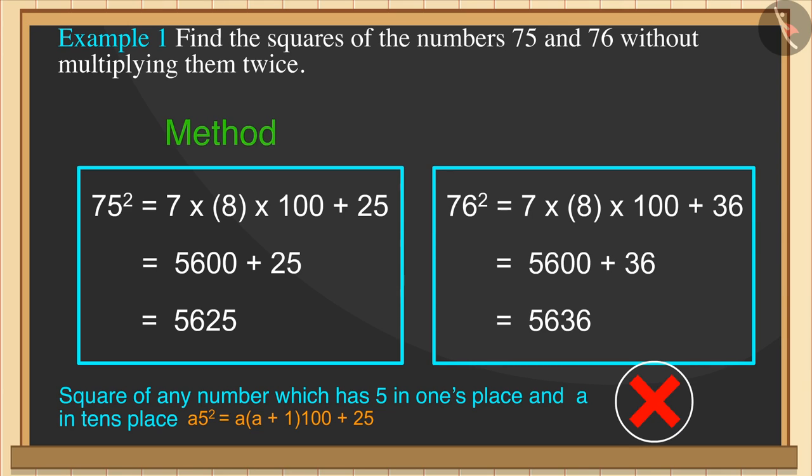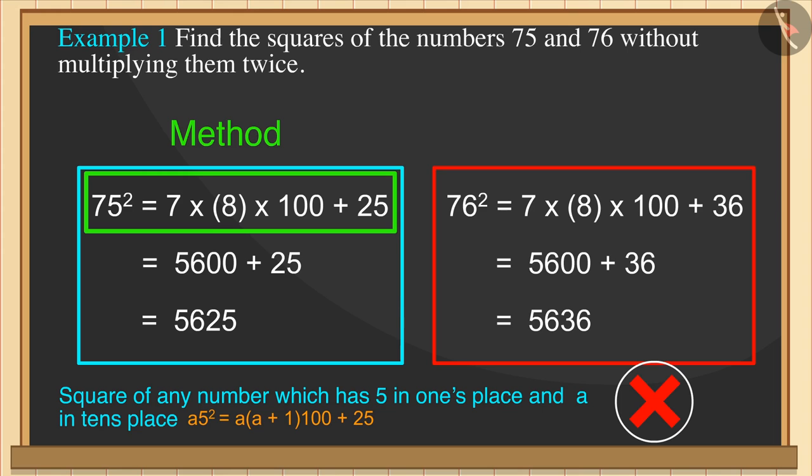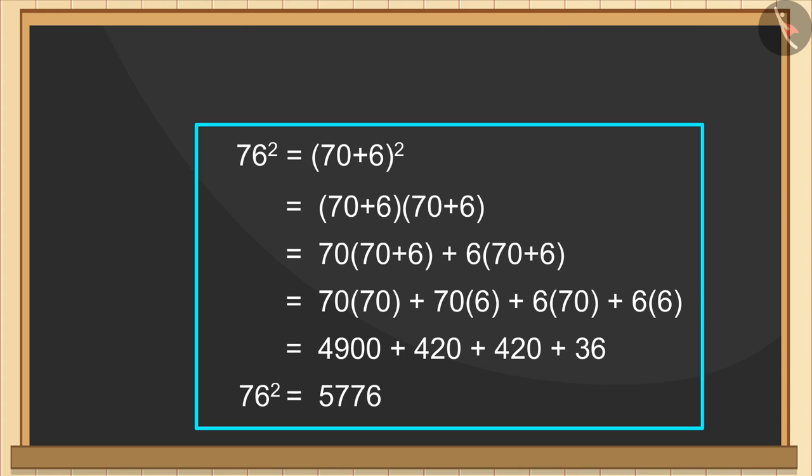Because the method applied here to find out the square of 75 is used to find the square of numbers ending in 5. There are several ways to find the square of 76. One of the methods is given here.